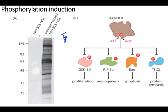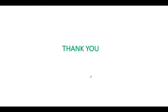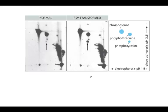For example, hypoxia-induced factor 1-alpha drives angiogenesis, BAD is involved in apoptosis, and GSK3 is involved in proliferation. Phosphorylation of tyrosine is the main key which is being influenced by these kinases.